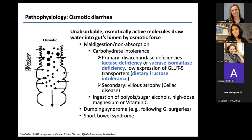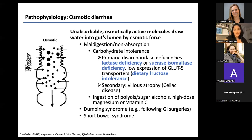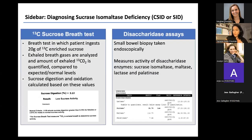People with dumping syndrome — often a side effect of bariatric surgery or gut resection — experience osmotic diarrhea because eating too much sugar at once without enough intestinal length or enzymatic activity to break it down causes an osmotic rush into the bowel. Short bowel syndrome similarly results in malabsorption of various sugars and carbohydrates, creating an osmotic load that draws water into the bowel. These are all examples of osmotic diarrhea.